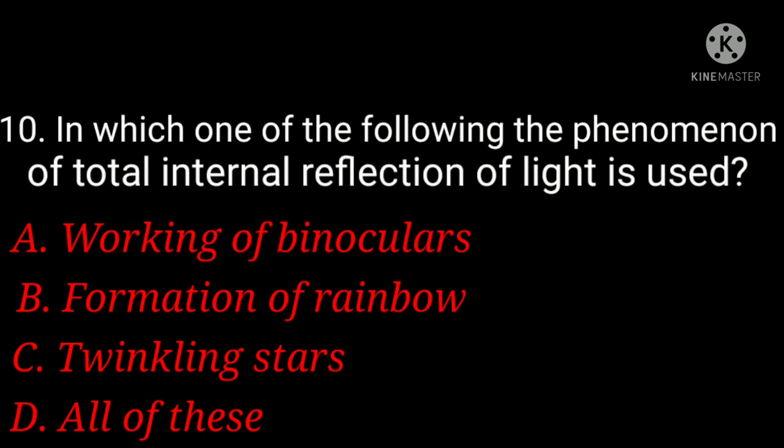In which of the following is the phenomenon of total internal reflection of light used? A. Working of binoculars, B. formation of rainbow, C. twinkling stars, D. all of these. And the answer is option B, formation of rainbow.